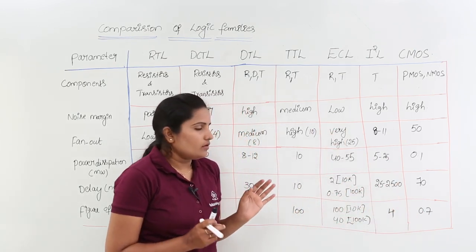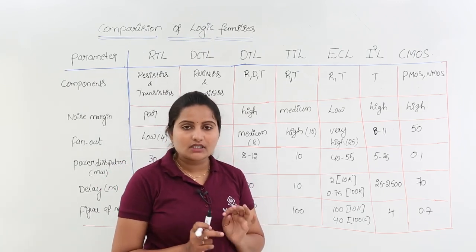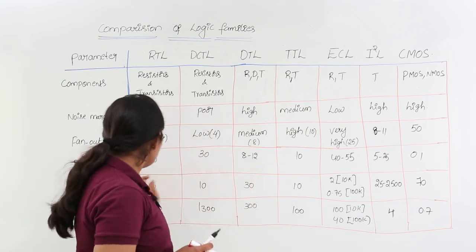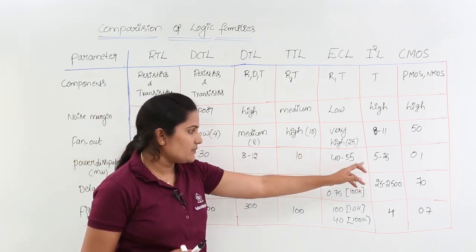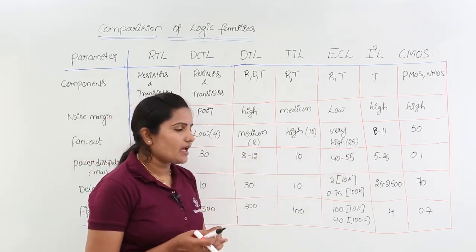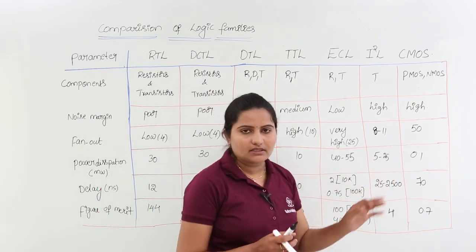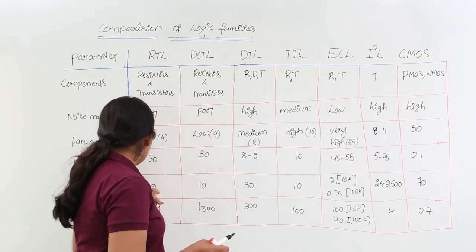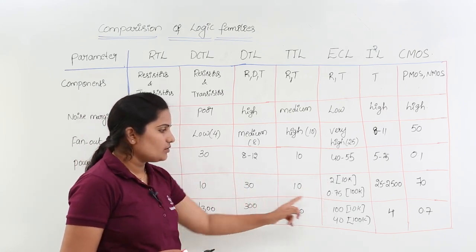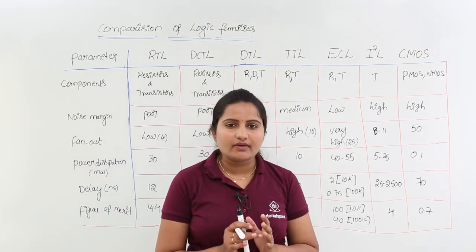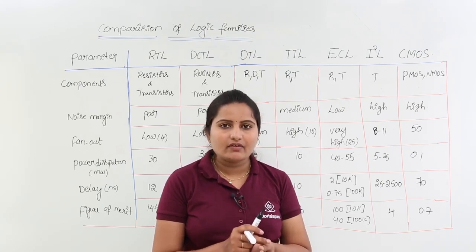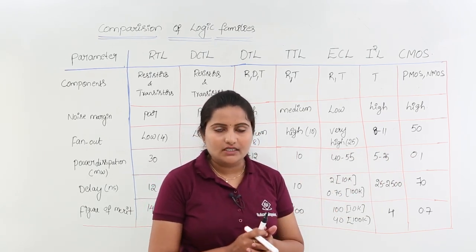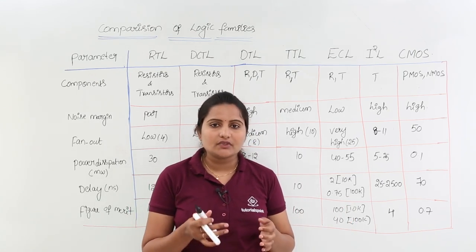Two important points for exams from this comparison: ECL has the highest power dissipation, while CMOS has the lowest power dissipation among all logic families. ECL is the fastest logic family — its propagation delay is the least. CMOS has low power dissipation and ECL is the fastest — these are the key takeaways you will be asked in theory questions in your exams.